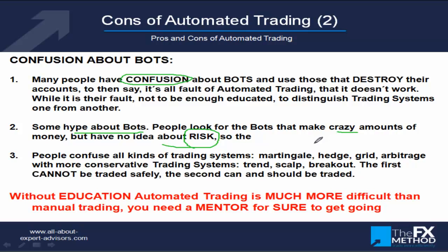The top traders in the world — George Soros, Renaissance Technologies — make around 100% per year, and they have technology, mathematicians, and everything in their favor. They are market makers, the big sharks. So if you see a bot doing something close to that, it's probably either extremely high risk or an unaudited account. This hype, with people looking for crazy bots and having no idea about risk, is really harming the automated trading industry. We forbid martingale, hedge systems, grid systems, and arbitrage in our education. High-risk trading will never work — it's ludopathy.